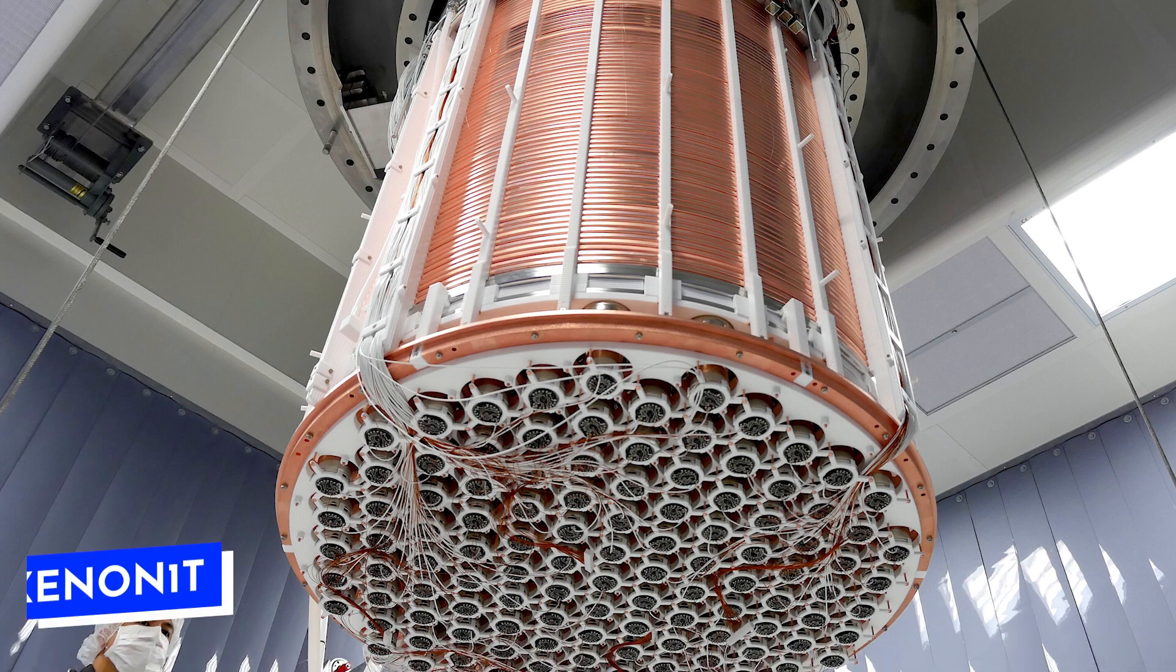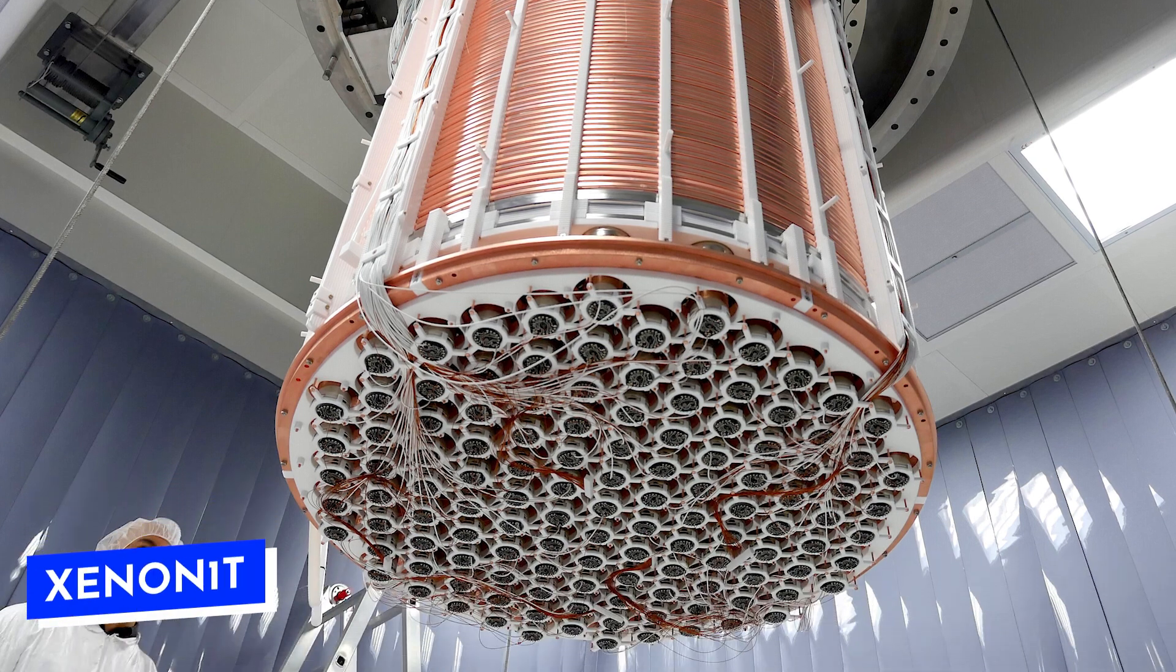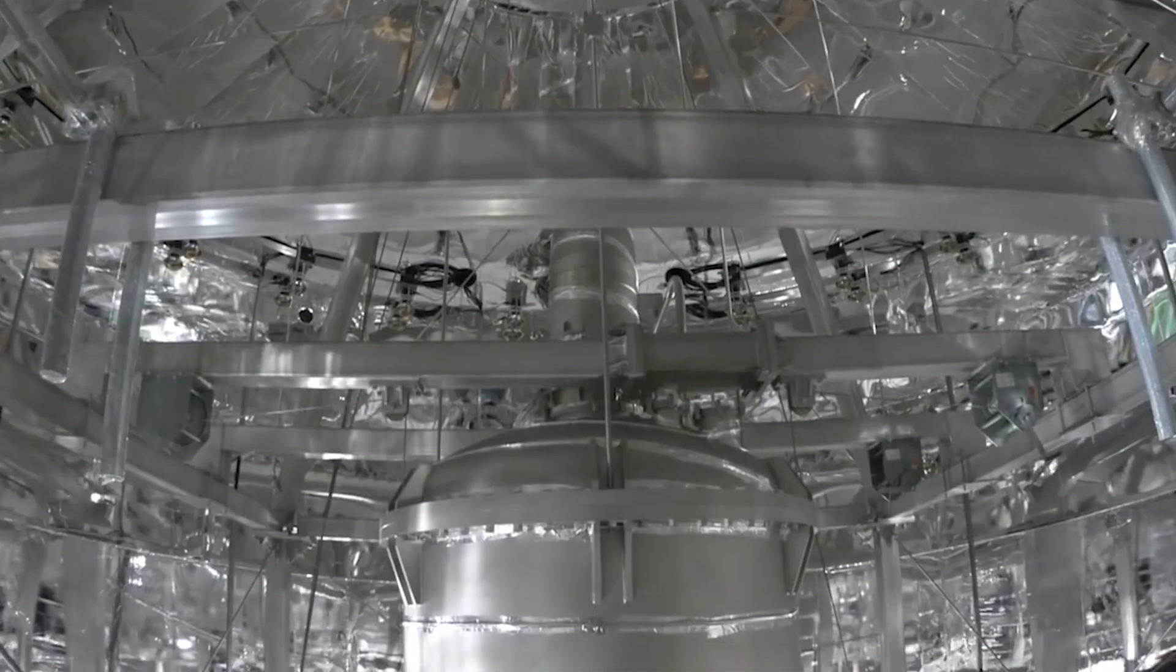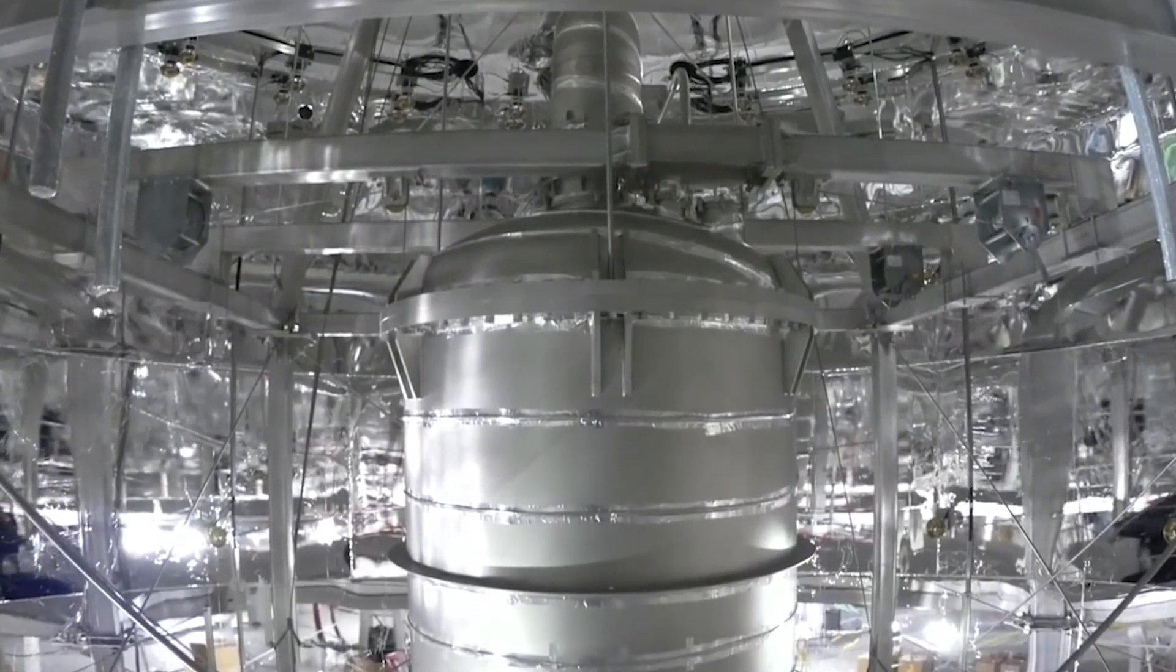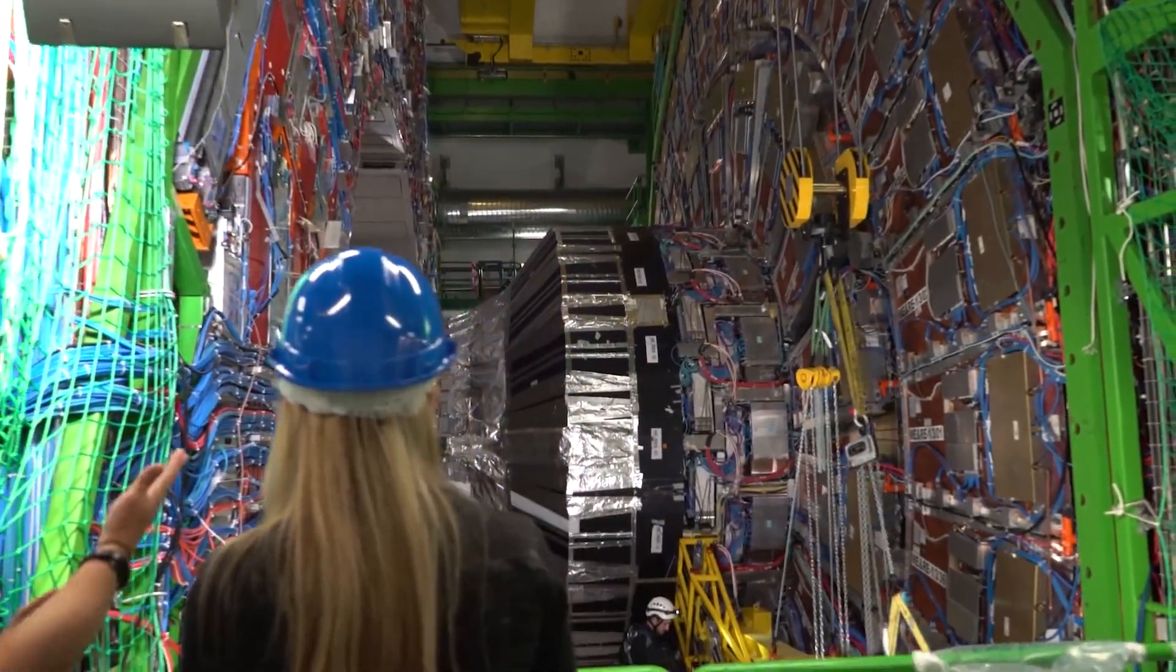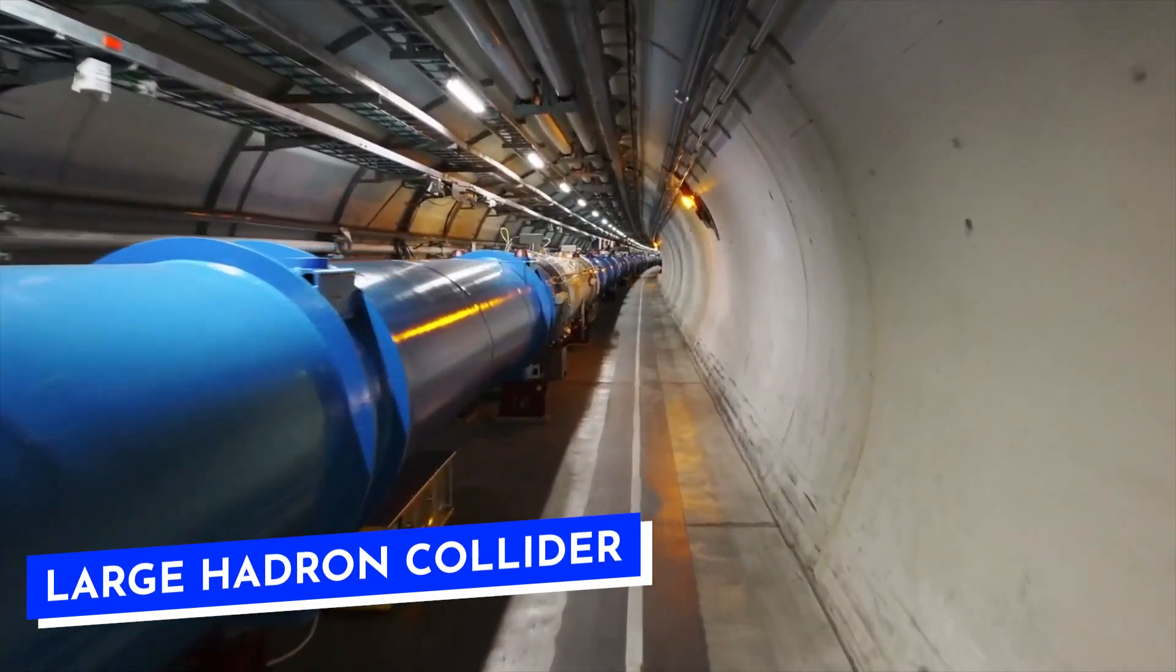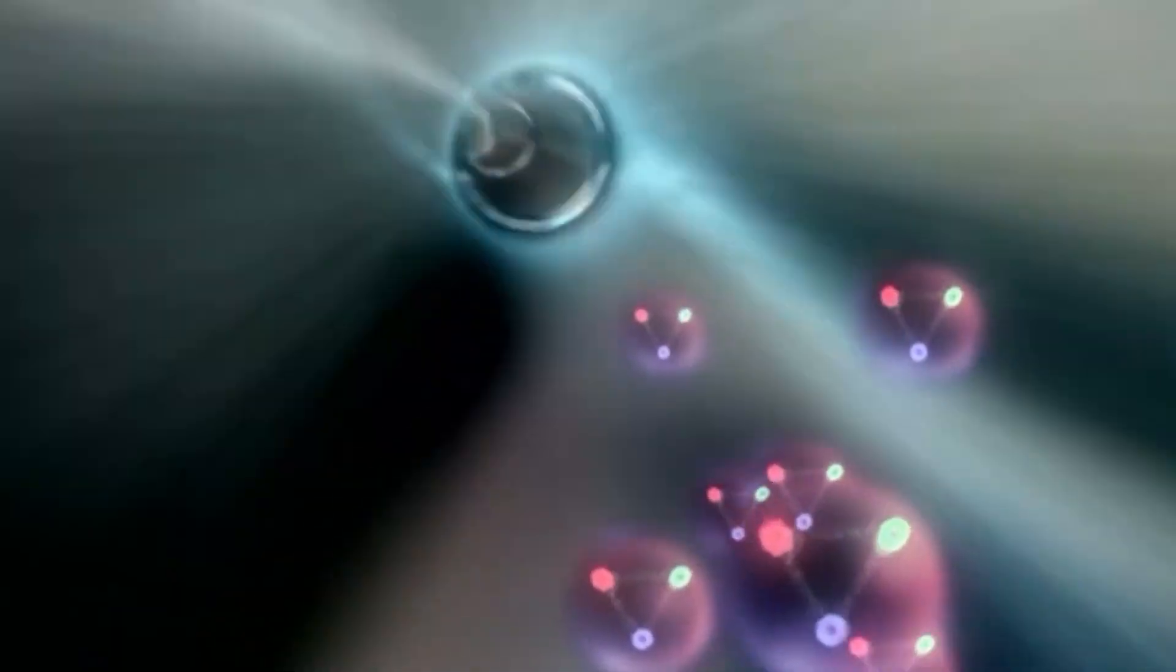Experiments like Xenon 1T are key in this big space search, working in the quietest places on Earth to find dark matter mixing with other stuff. In the same way, places like the Large Hadron Collider are really important, looking at high-speed particle smashes to find signs of dark matter.